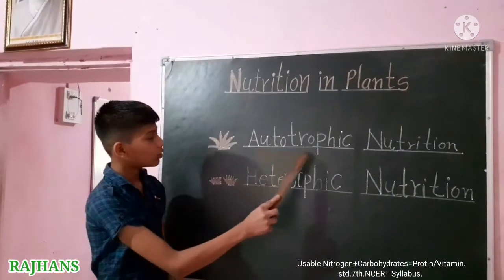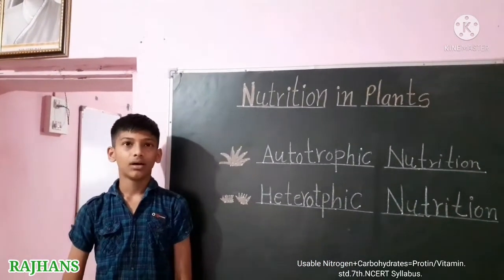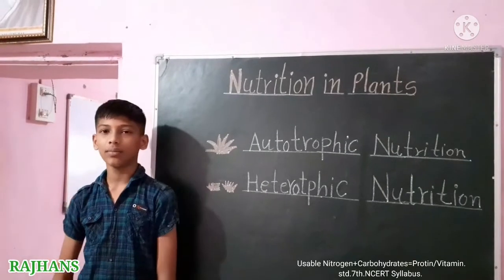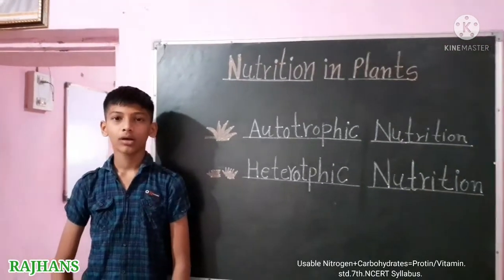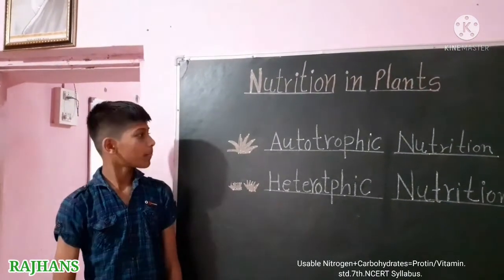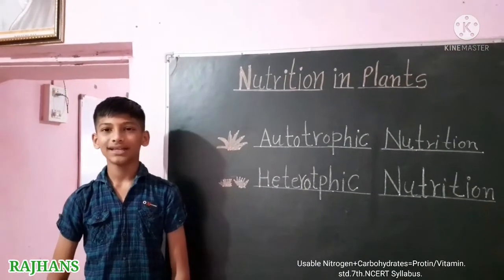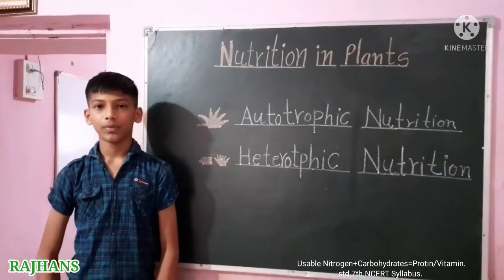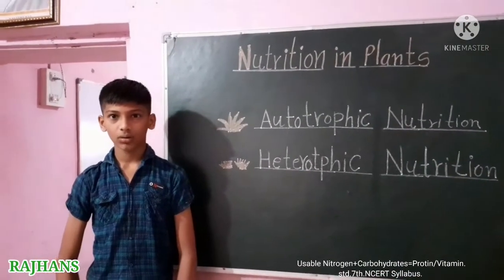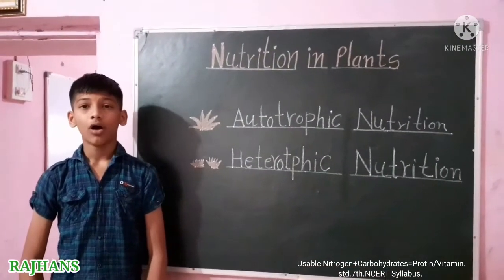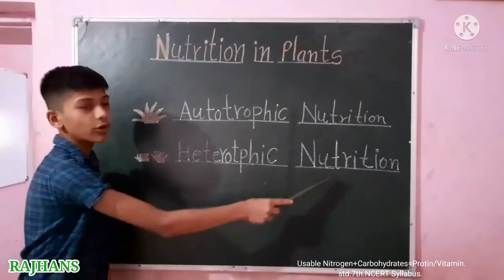There are two modes of nutrition: autotrophic nutrition and heterotrophic nutrition. Most plants and some bacteria produce their own food — they are called autotrophs. All animals and some plants directly or indirectly depend on plants for food — they are called heterotrophs.